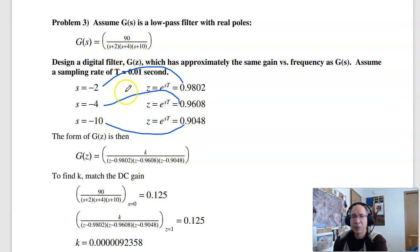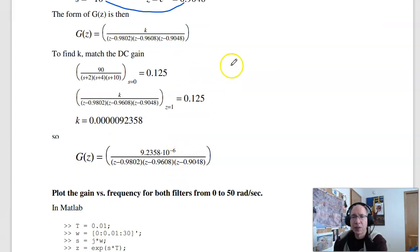I've got three poles in the s-plane, I've got three poles in the z-plane. And you can see the one-to-one mapping. Two goes to 0.98, four goes to 0.96, 10 goes to 0.9. What the poles do is they give you the shape of the gain versus frequency. It looks kind of like this.